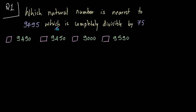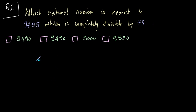Actually, nine thousand four hundred and ninety-five is not divisible by seventy-five. The question asks for a number which is closest to nine thousand four hundred and ninety-five which is divisible by seventy-five. So let's actually divide 9495 by 75.